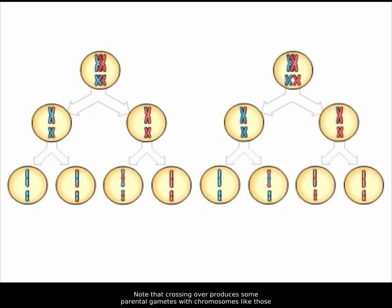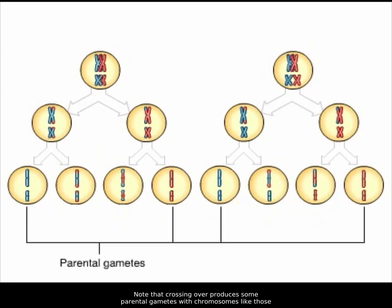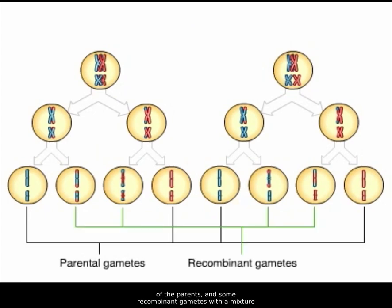Note that crossing over produces some parental gametes with chromosomes like those of the parents, and some recombinant gametes with a mixture of genes from both sets of chromosomes.